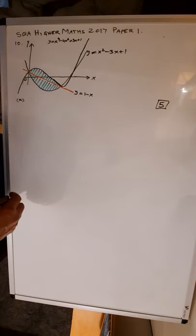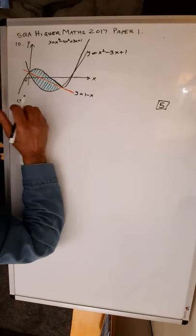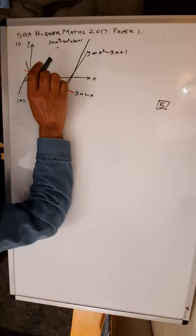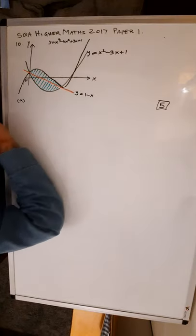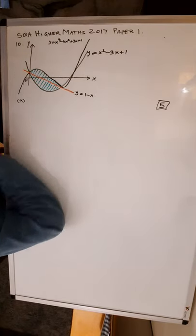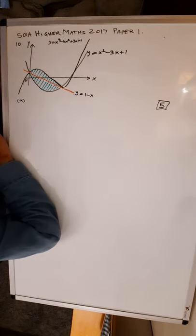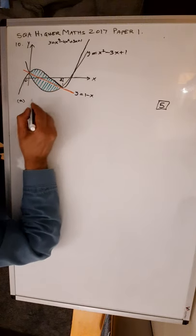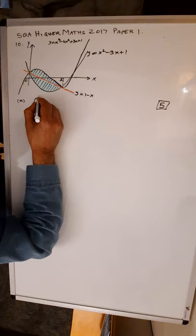SQA Higher Maths 2017 Paper 1, question number 10. Two curves with equations y equals x cubed minus 4x squared plus 3x plus 1 (a cubic) and x squared minus 3x plus 1 (a quadratic) are shown, along with the line y equals 1 minus x. Calculate the shaded area from 0 to 2. This is for 5 marks, so allow about 7 or 8 minutes.